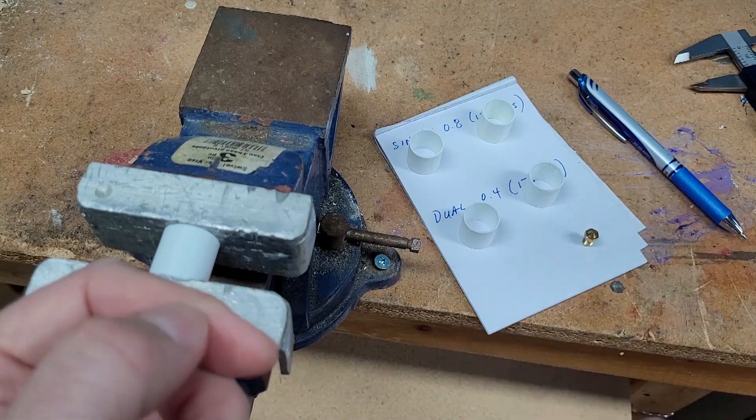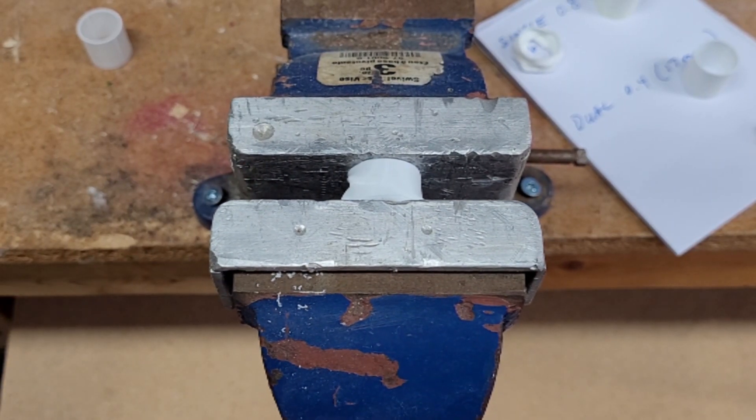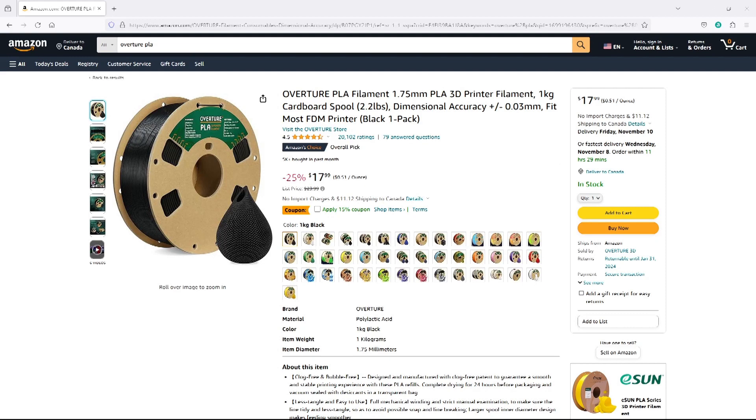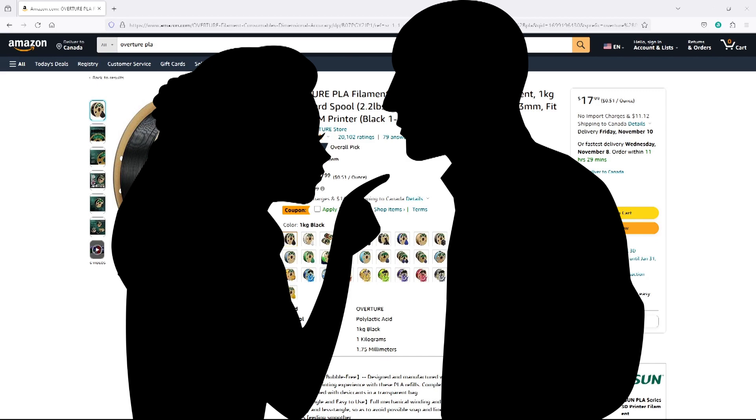Before we get to the strength results, I used white Overture PLA, and if you were to buy a roll from the link in the description below, it'll keep my wife in wine and keep her from killing me over the mess that I typically make.